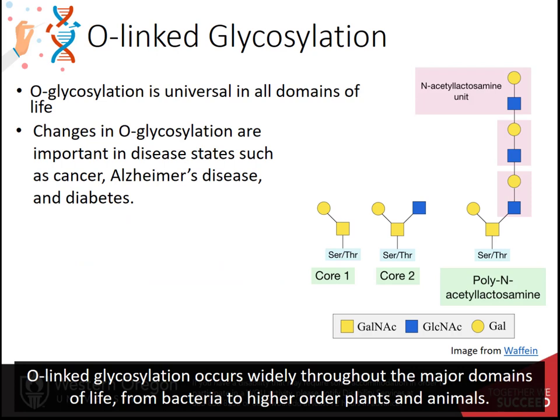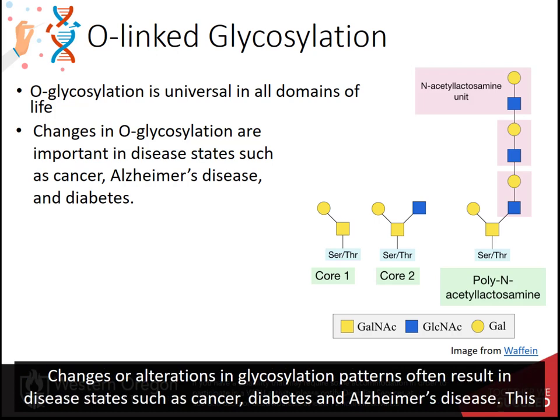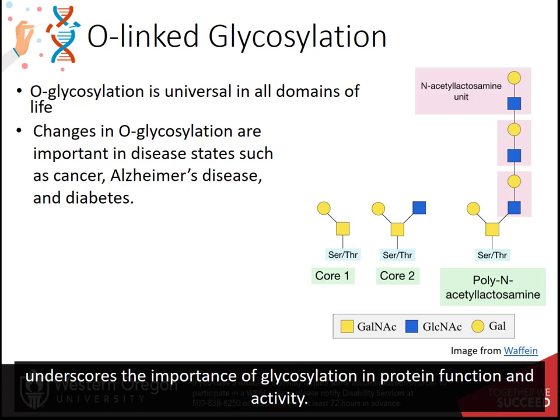O-linked glycosylation occurs widely throughout the major domains of life, from bacteria to higher-order plants and animals. Changes or alterations in glycosylation patterns often result in disease states such as cancer, diabetes, and Alzheimer's disease. This underscores the importance of glycosylation in protein function and activity.